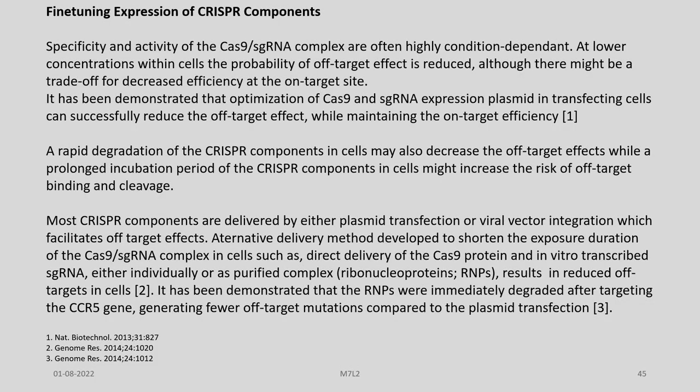Most CRISPR components are delivered by either plasmid transfection or viral vector integration, which facilitates off-target effects. Alternative delivery methods have been developed to shorten the exposure duration of the CRISPR-Cas9-sgRNA complex in cells, such as direct delivery of the Cas9 protein and in-vitro transcribed sgRNA either individually or as purified ribonucleoprotein complexes, resulting in reduced off-target effects. It has been demonstrated that ribonucleoproteins were immediately degraded after targeting the CCR5 gene, generating fewer off-target mutations compared to plasmid transfection.